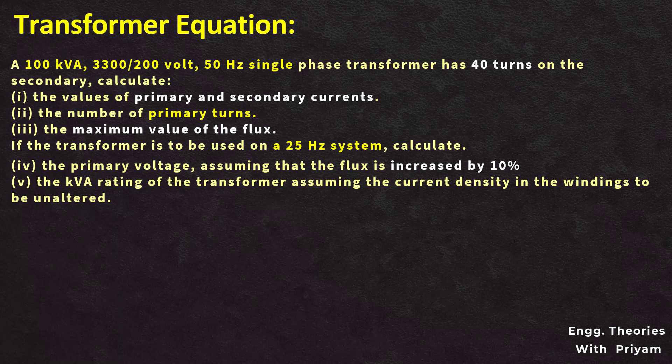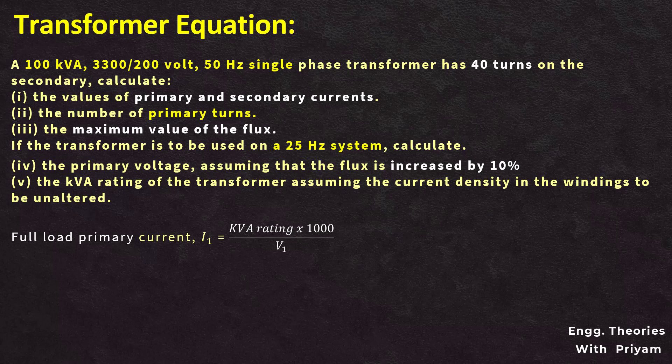Our last problem: we have a 100 kVA transformer with a rating of 3300 by 200 volt, 50 hertz single-phase, with the number of turns in the secondary equal to 40. We need to determine the primary and secondary currents, number of primary turns, and maximum flux. From the ideal transformer equation V1·I1 = V2·I2 = kVA rating, the primary full load current I1 equals 100 × 1000 divided by V1 of 3300, which results in 30.3 ampere.